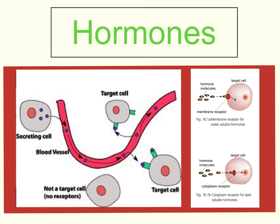Hormones are chemical messages. They're secreted into the blood by endocrine glands, which are made up of cells that produce hormones — these little blue molecules here. Hormones are proteins, therefore they are produced inside cells during protein synthesis. This cell secretes these hormones into the blood vessels, and hormones travel around the body in the blood.